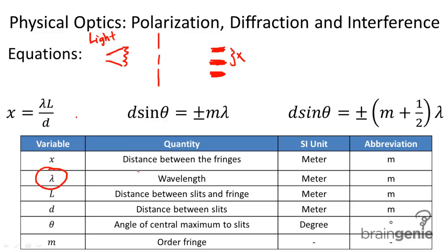The symbol is the distance, or the wavelength, the length of the wavelength of light. L is the distance between slits and the fringe. This would be this distance here, L. And D is the distance between the slits. You can have multiple slits.